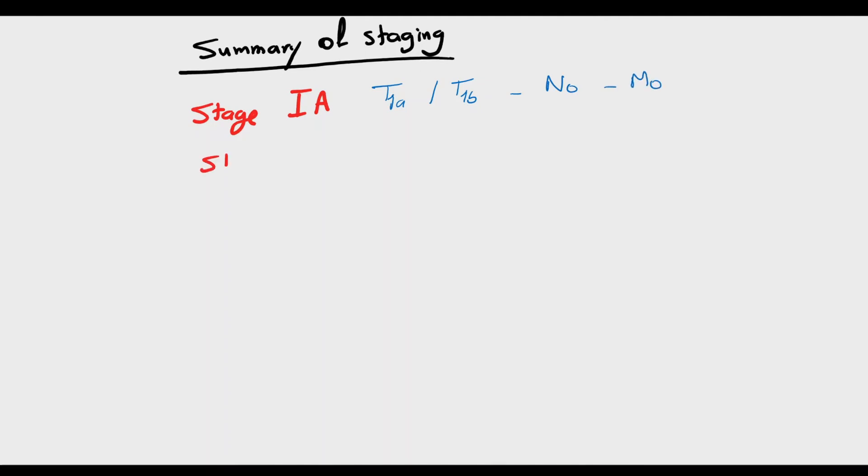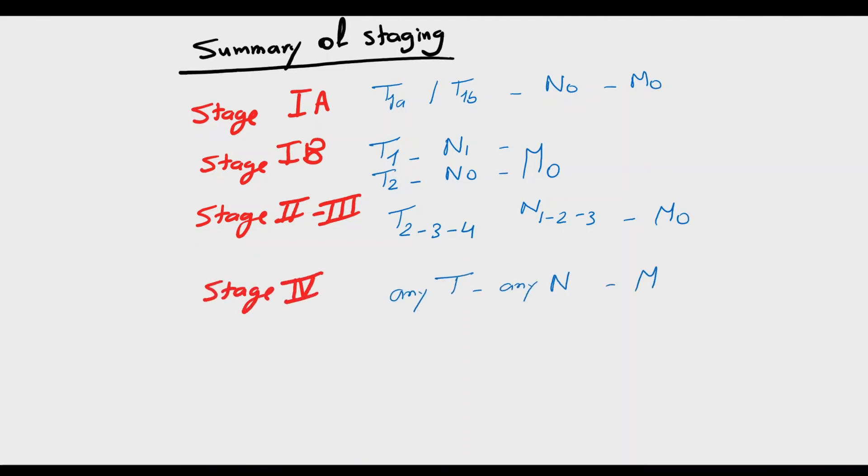Stage 1A is superficial tumors without lymphatic or distal metastasis, confined to tumors with T1A and T1B. Stage 1B is also relatively superficial tumors T1 and T2 with only N1 with T1 tumors and no distal metastasis.